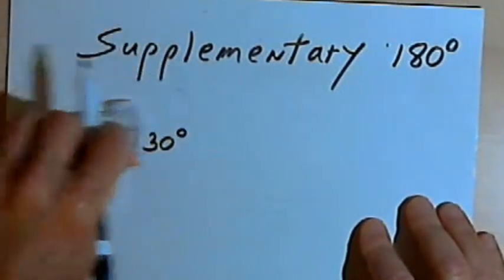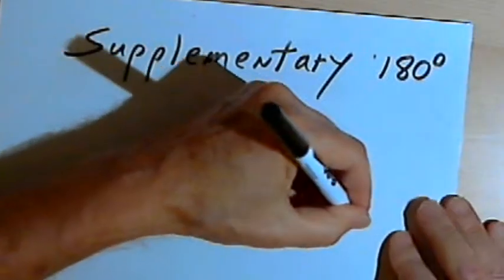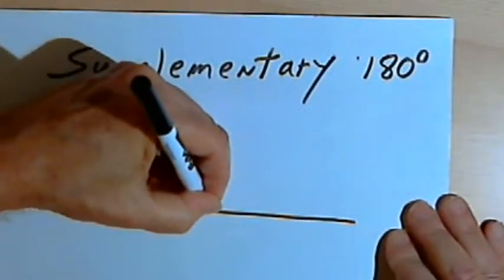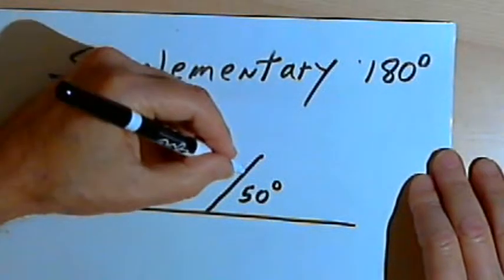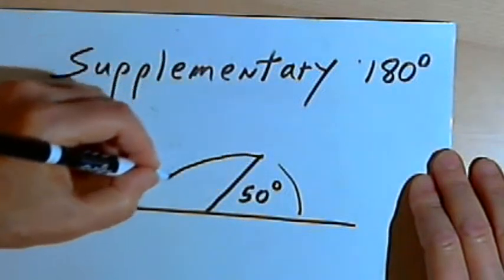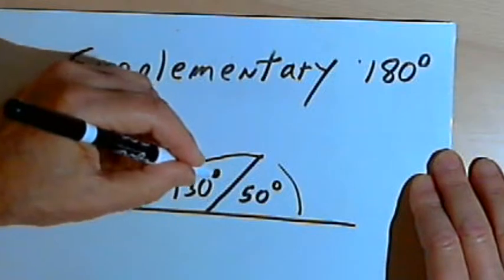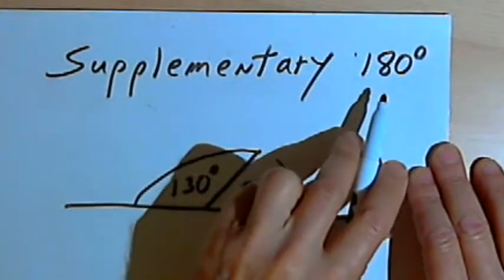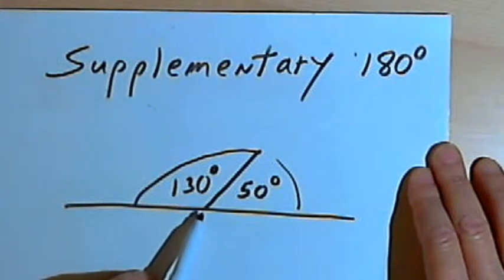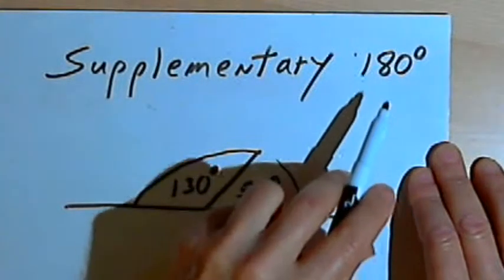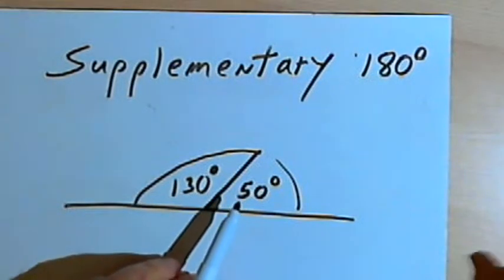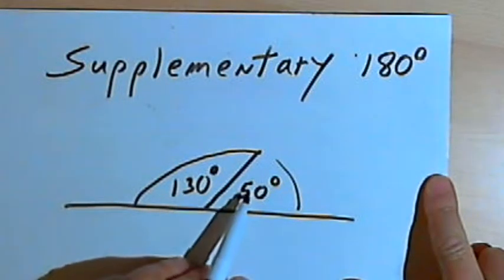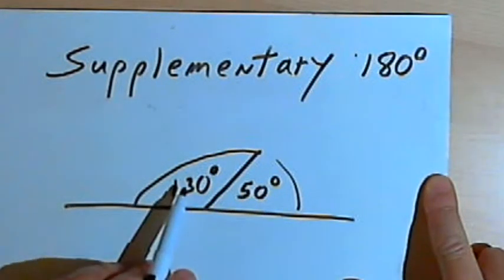If they're adjacent to each other, they're going to form a straight angle. So if I draw a straight line and I have one angle that's 50 degrees and another angle adjacent to it that's 130 degrees, then those two angles together will add up to 180 degrees, which will form a straight angle. So supplementary angles add up together to 180 degrees. If we place them together, we're going to have a straight line. Like complementary angles, they don't have to be adjacent, but if they are adjacent, they'll form a straight angle.